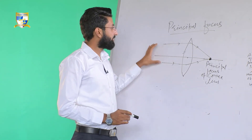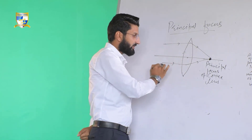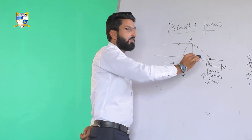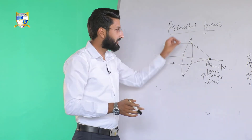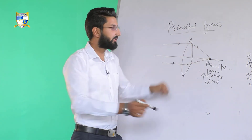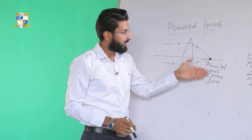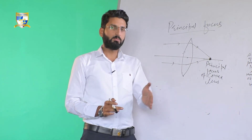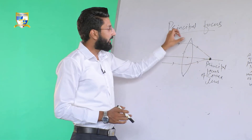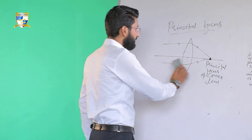To summarize: when rays of light are incident on a convex lens parallel to its principal axis, after passing through the lens they get converged and meet at a common point on the principal axis. That common point is the principal focus of the convex lens — the point where the rays of light get converged after passing through the lens.